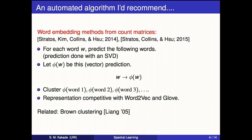This method works quite well in many different settings and is extremely easy to implement. There have been papers arguing that neural network methods are basically doing the same thing — you can implement this idea with a singular value decomposition. It's related to work by Percy in his master's thesis on brown clustering. This is a very intuitive way to learn word embeddings by figuring out what words follow some word and doing the grouping based on that.